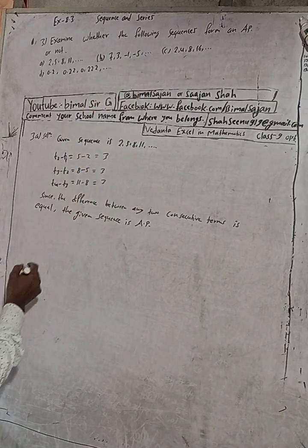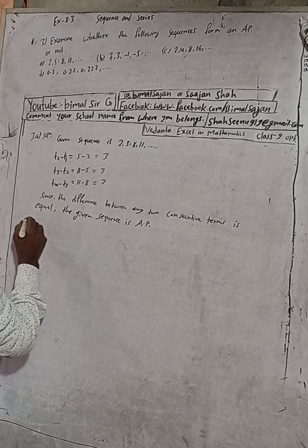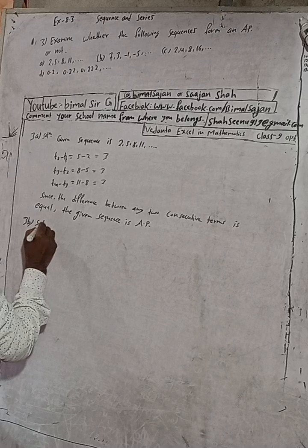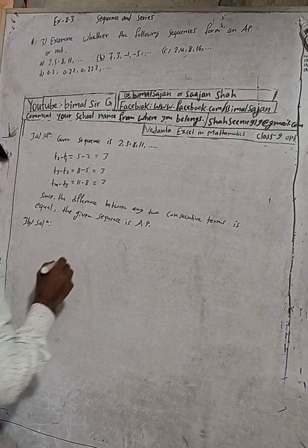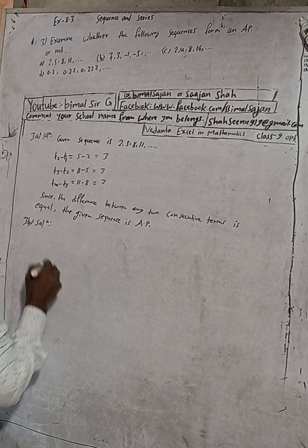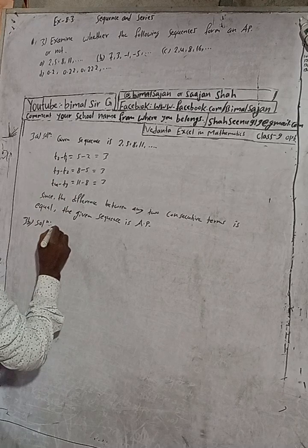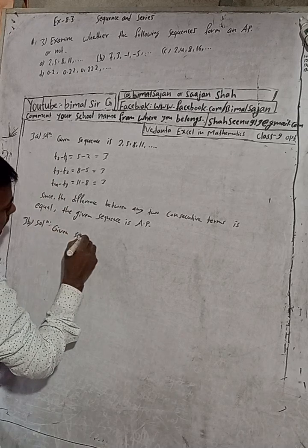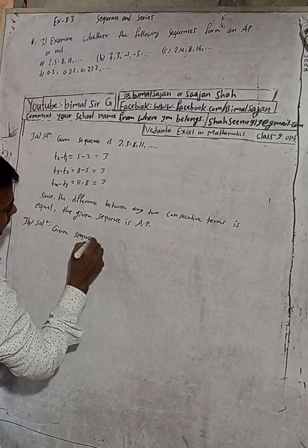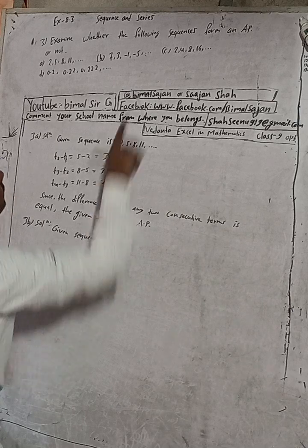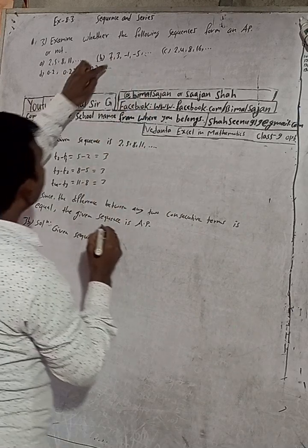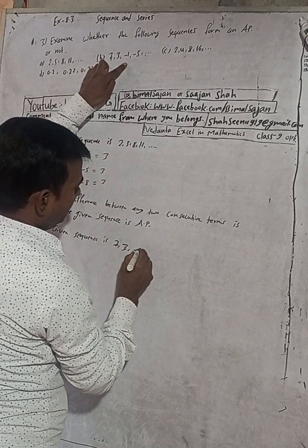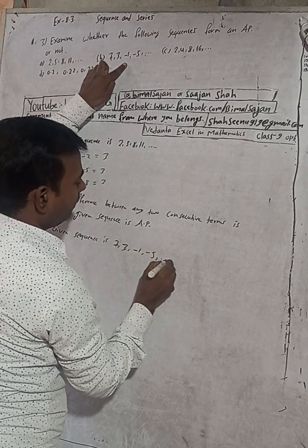Now for part B, the given sequence is 7, 3, -1, -5, dot dot dot.